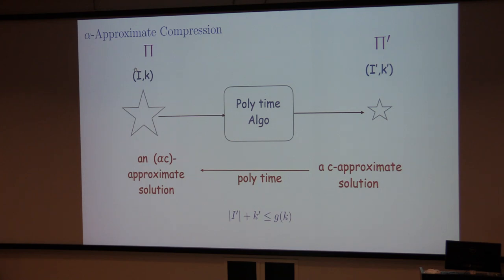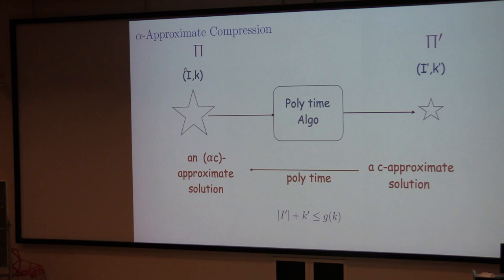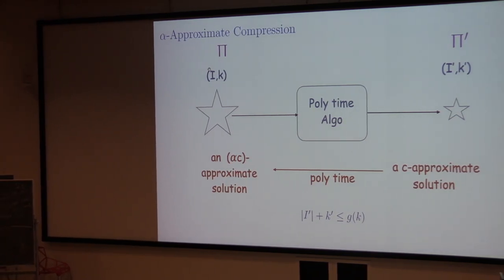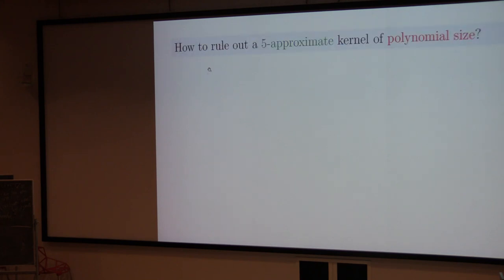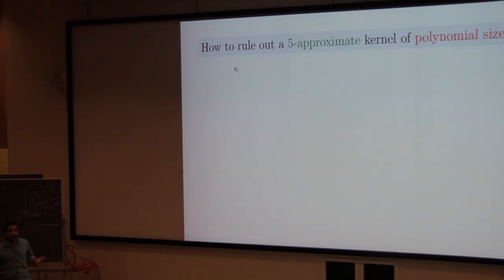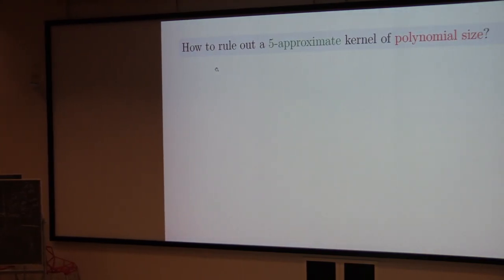In this talk we're largely going for lower bounds, and most of the examples except one are from the paper on lossy kernelization. For some problem, I want to rule out, say, a 5-approximate kernel of polynomial size. So we ask: how do we rule out such kernels?